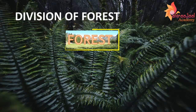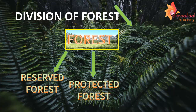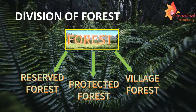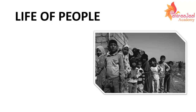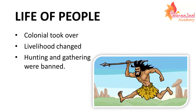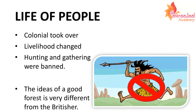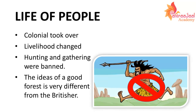The Forest Act divided forests into three parts: first was Reserved Forest, second was Protected Forest, and third was Village Forest. Due to this, there were a lot of changes in the lives of villagers. Hunting and gathering, which was the base of their livelihood, was banned.